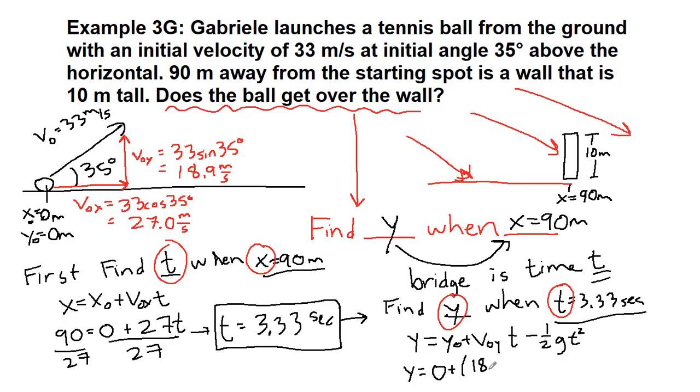So 0 plus the initial velocity in the y direction is 18.9 times 3.33 minus 1.5 times 9.8 times 3.33 squared.